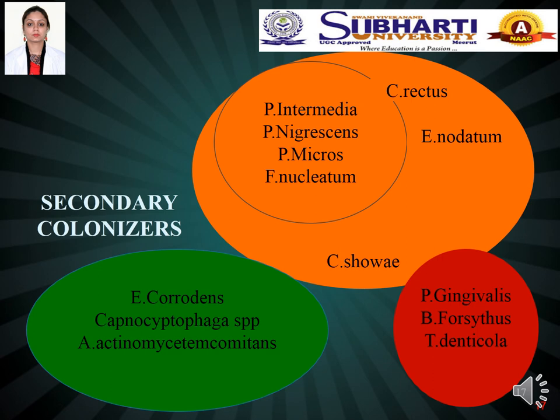The orange complex consists of Prevotella species such as Prevotella intermedia and Prevotella nigrescens, Campylobacter species like Campylobacter rectus, and Fusobacterium nucleatum. The green complex consists of Capnocytophaga species. The red complex — a very important complex — consists of Porphyromonas gingivalis, Bacteroides forsythus and Treponema denticola. The red complex is very important when discussing periodontitis. The name 'red' is given because this complex is associated with bleeding on probing.